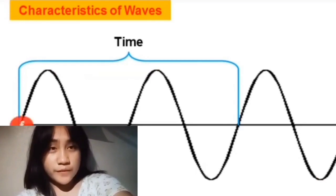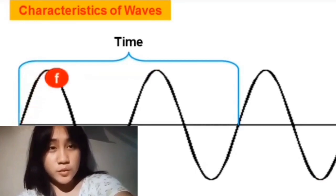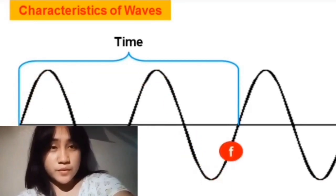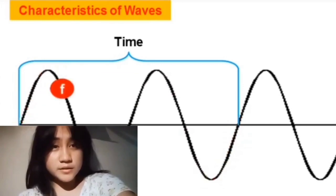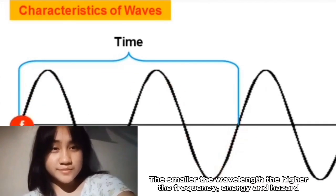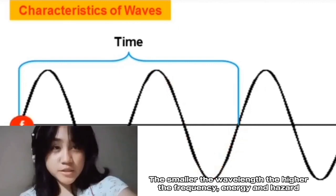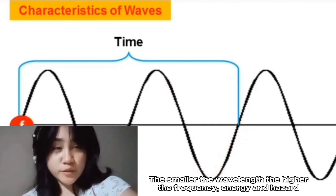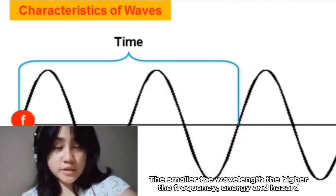Last is frequency. It is the number of waves passing a point in a certain amount of time, giving frequency a unit of hertz, since 1 hertz equals one wave per second. Just remember: the smaller the wavelength, the higher the frequency and the energy output.